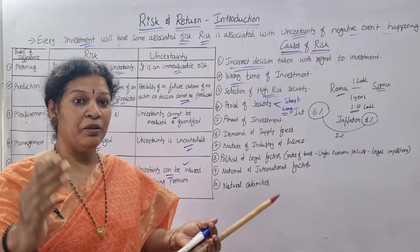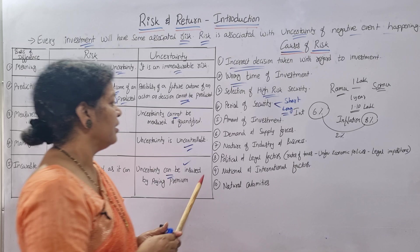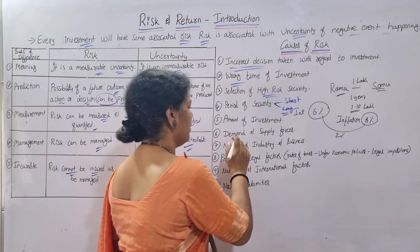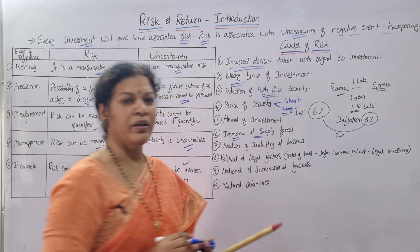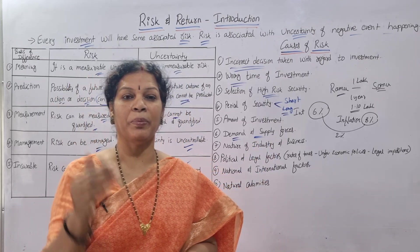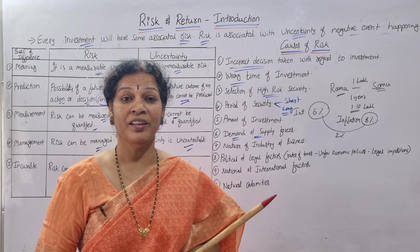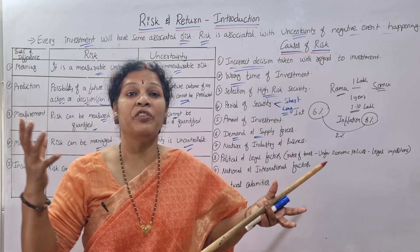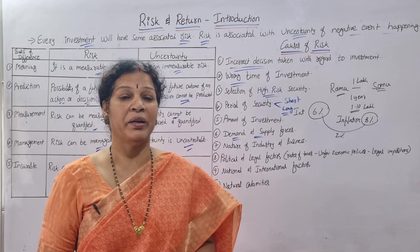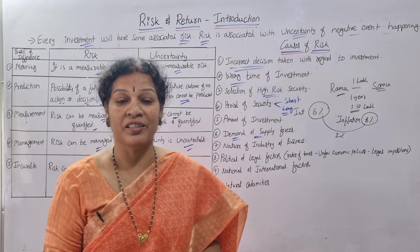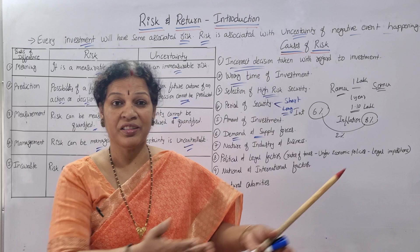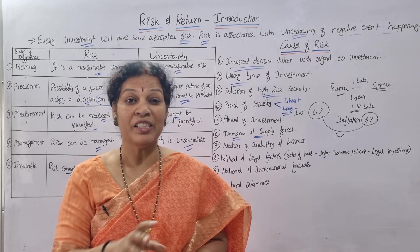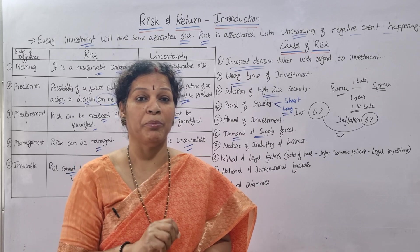High investment generally means high risk. Sixth cause: Demand and supply forces, which you know from economics. When demand is high and supply is less, there is a risk. When supply is high — meaning lots of investment is available — but demand is not there, there is a surplus amount and that is also a risk. You have to manage that surplus.